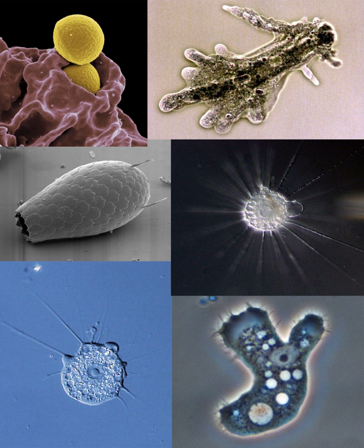Free-living amoebae may be testate, enclosed within a hard shell, or naked, also known as gymnamoebae, lacking any hard covering. The shells of testate amoebae may be composed of various substances, including calcium, silica, chitin, or agglutinations of found materials like small grains of sand and the frustules of diatoms.